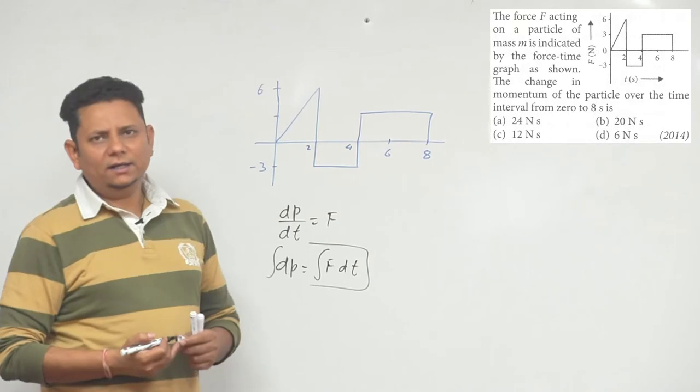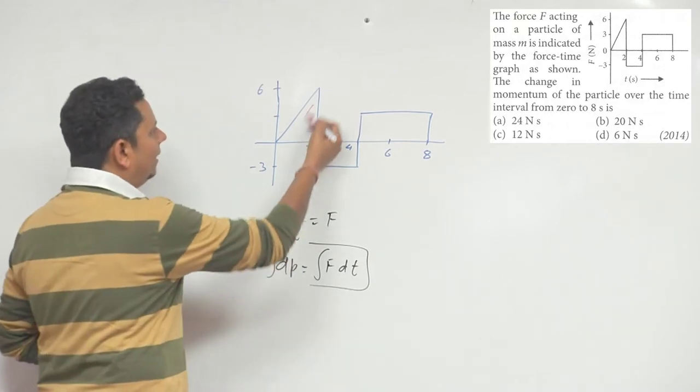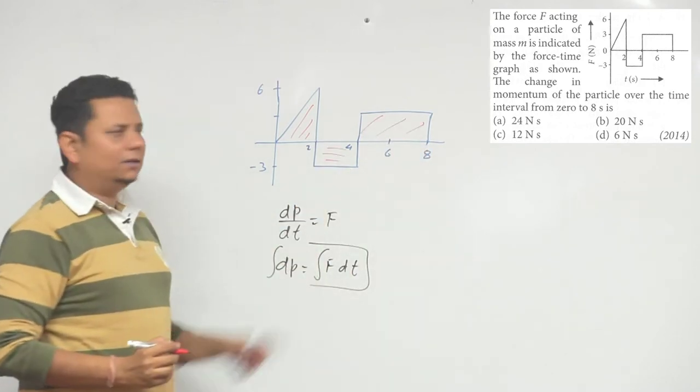So we basically have to find the area. Now this area, first this one will be positive area, this will also be positive area, and this one will be negative area.